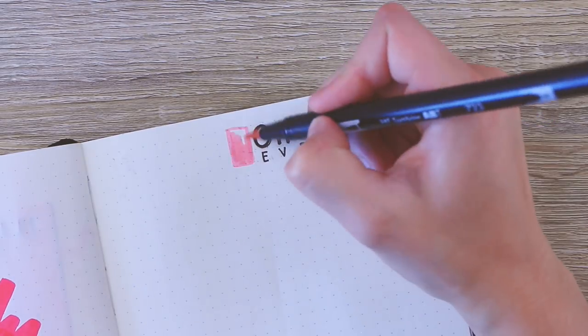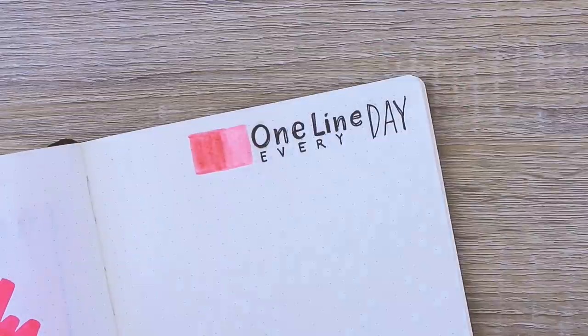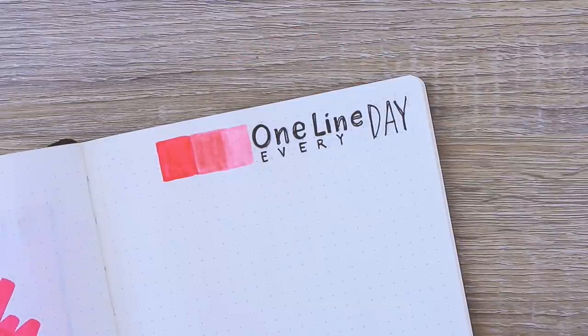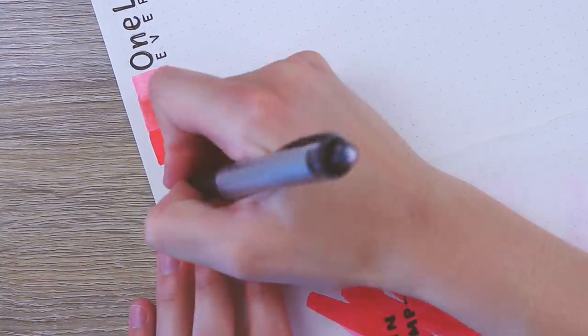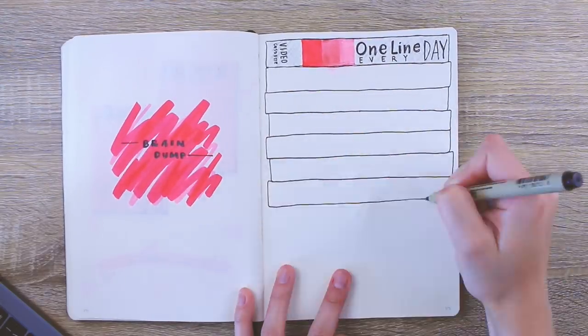When I was going back and looking through my old spreads, my one line a day pages were my favorite things to look at because it really captures a moment in time. I mean it's really cool to look back and reflect on that. I've kind of gotten away from doing these recently and I wanted to bring it back for this month because I feel like it's such a cool thing to be able to look at later in the year.